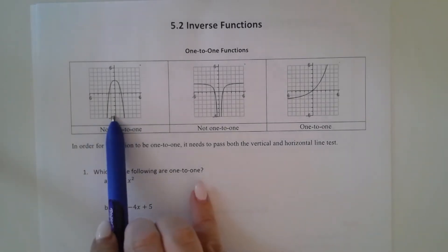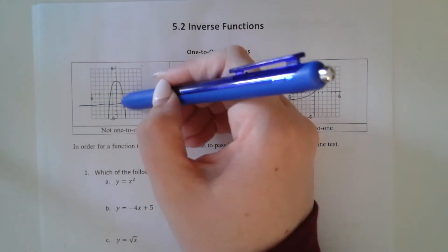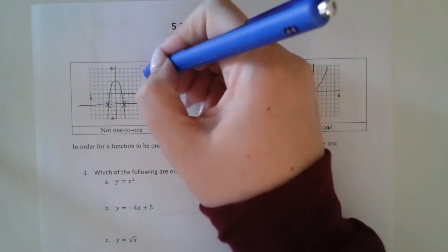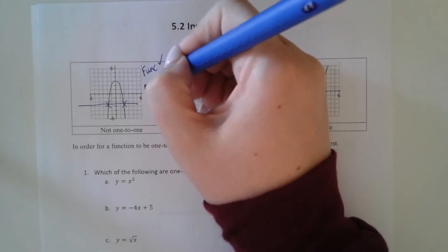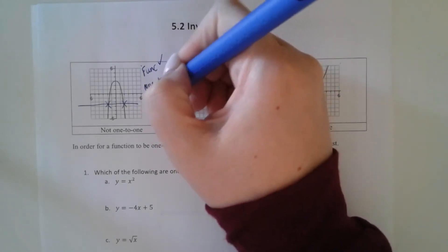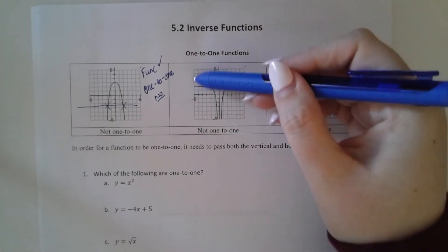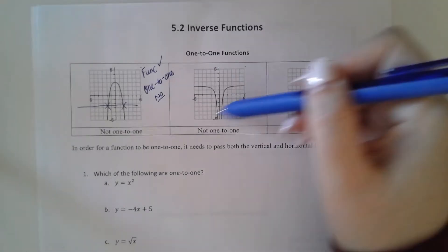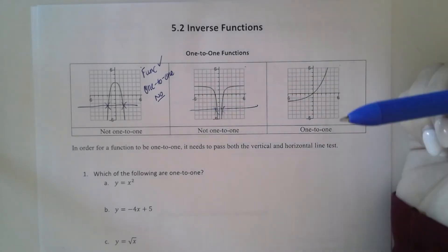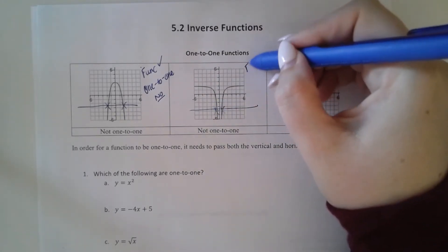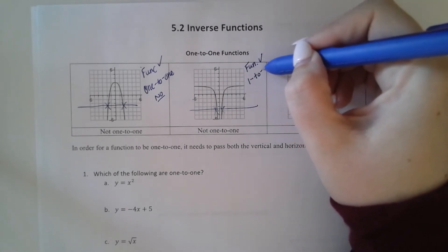For example, this one is not one-to-one because it passes the vertical line test but does not pass the horizontal line test. So is it a function? Yes. Is it one-to-one? No, because it doesn't pass the horizontal line test. This one, same thing — passes the vertical line test but does not pass the horizontal line test. It hits here twice. So is it a function? Yes. Is it one-to-one? No.